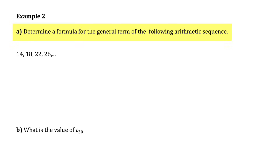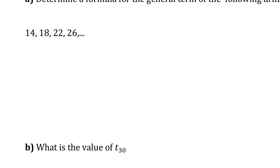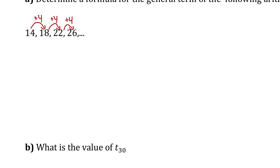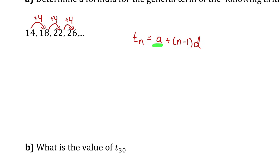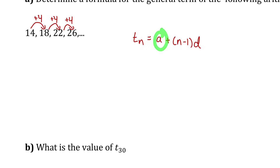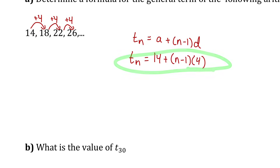Let's work with this formula in example 2. Part A says determine a formula for the general term of this arithmetic sequence. The common difference between each pair of consecutive terms is 4 — 18 minus 14 is 4, 22 minus 18 is 4, and so on. Using the general formula Tn = a + (n-1)d, I substitute a equals 14 and d equals 4. This formula can be used to find the value of any term based on its term number in this sequence.